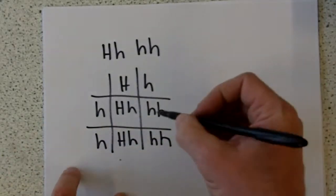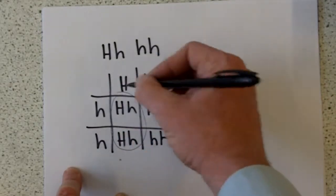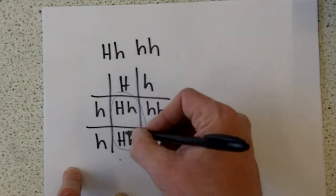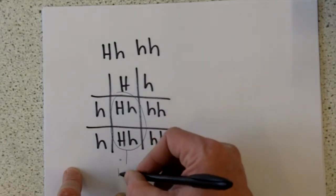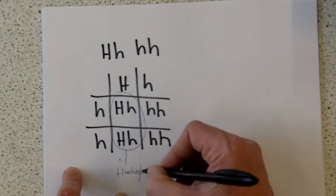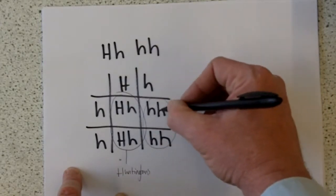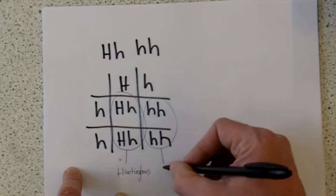So if we look at this now, in these two cases, because we have the dominant allele, that means these people will have Huntington's. And these ones, because they've got both of the recessive alleles for not having it, they will not.